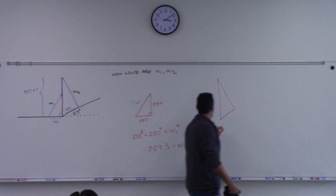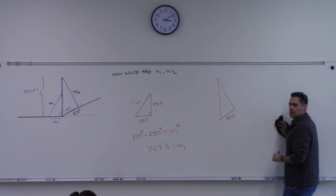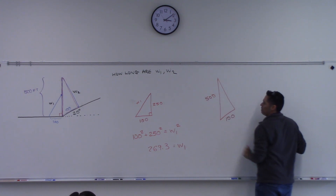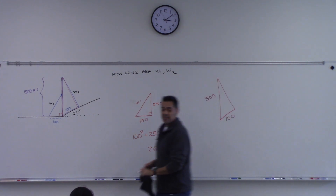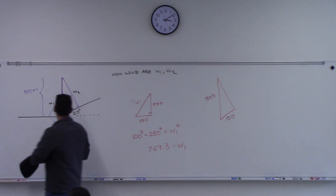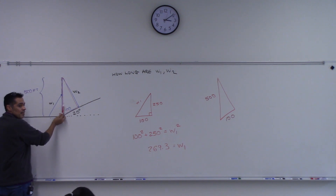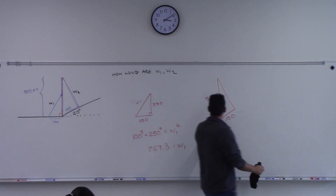You know this side is 100, and you know this side is 500. The angle is 70 degrees. From here to here is 20, from here to here is 90, which means the remaining angle there is 70. So that's 70 degrees.